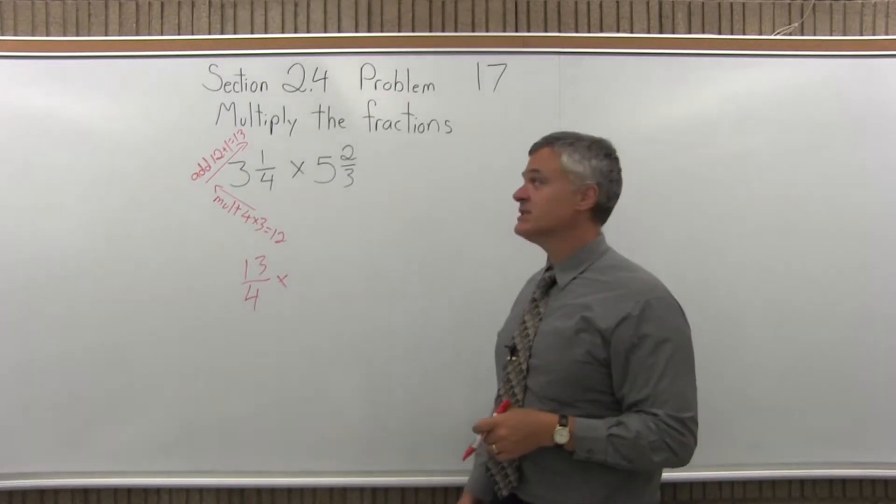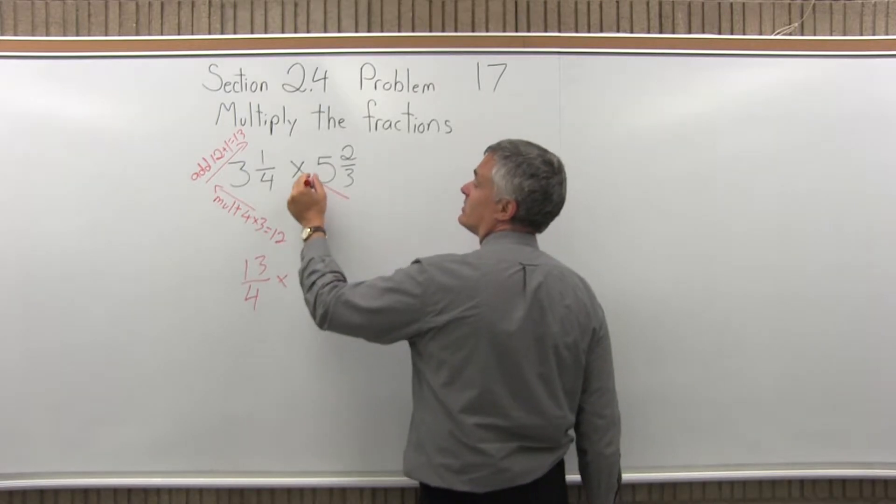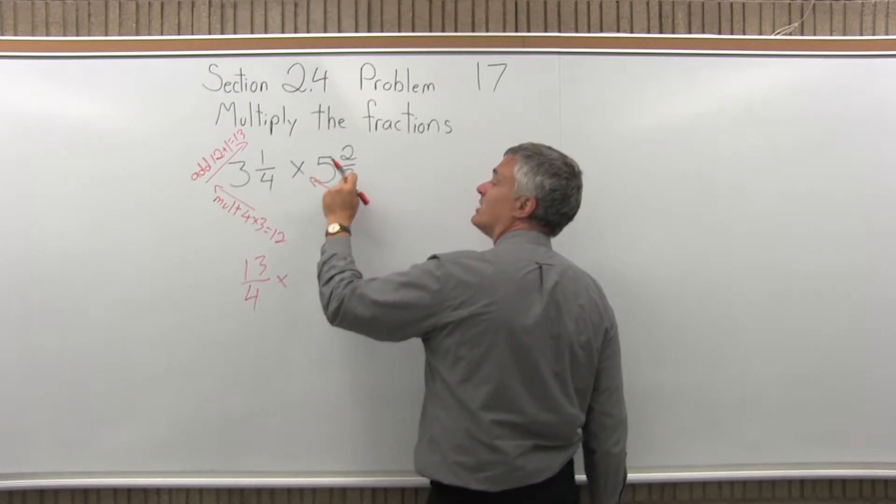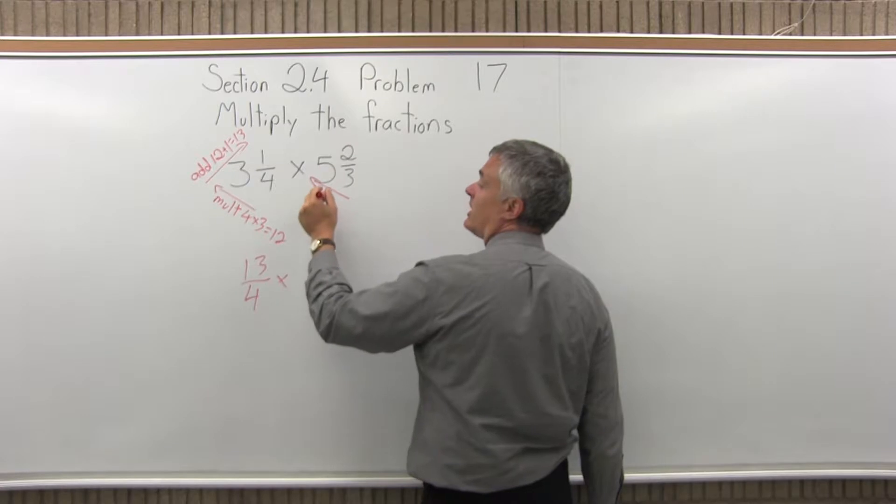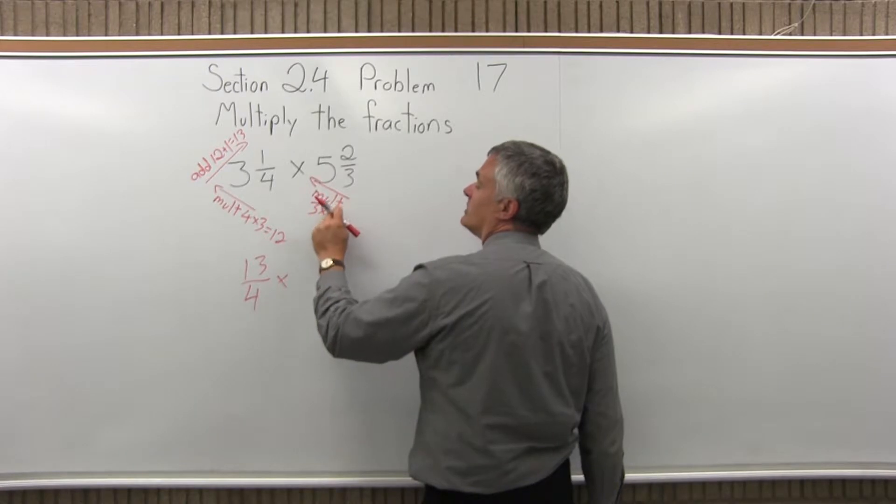I'll do the same process with the second fraction. 5 and 2 thirds, let's write that with only a numerator and a denominator. The denominator times the whole number in front, I want to multiply those values. So that will be 3 times 5, which is 15.